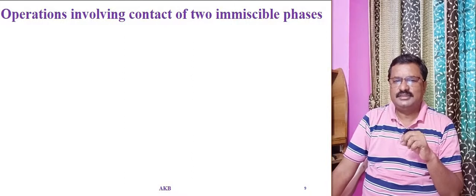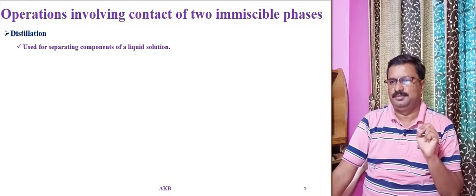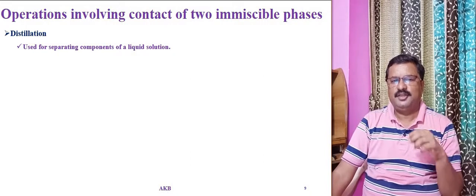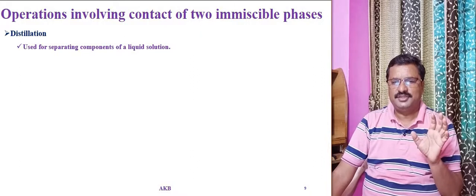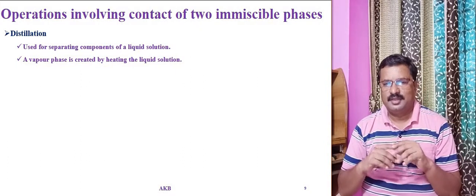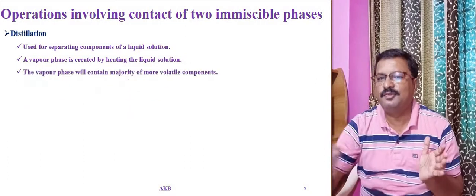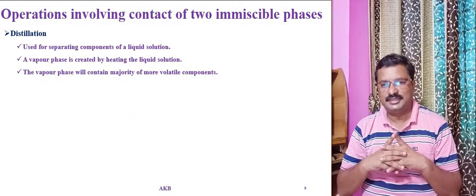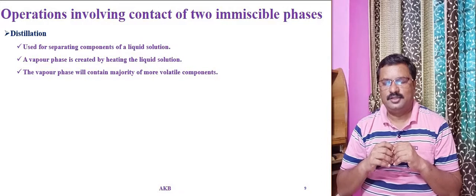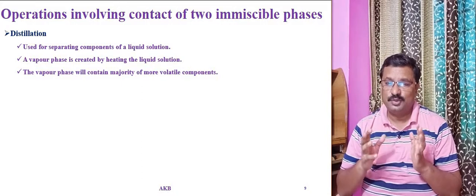Let us start with discussing distillation. Distillation is used to separate components of a liquid solution. When you have a liquid solution in which more than one component is present, one way of separating these components is distillation. A vapor phase is created out of the liquid solution by heating it. The newly formed vapor phase will contain the majority of more volatile components, whereas the liquid will contain less volatile components.